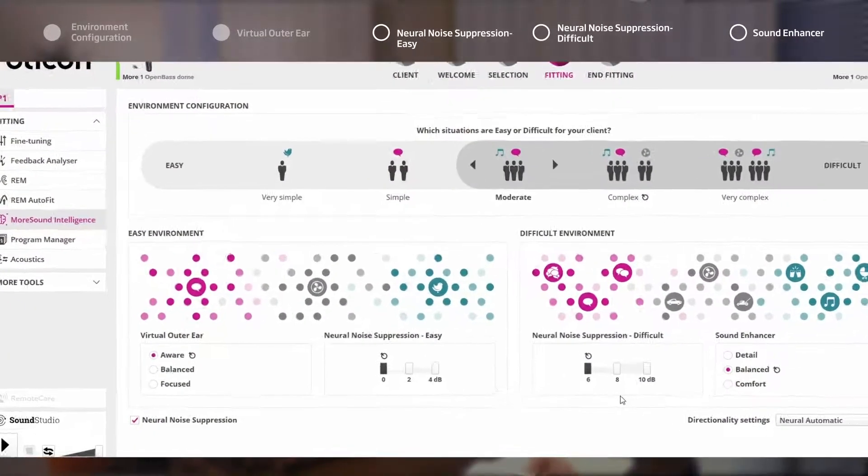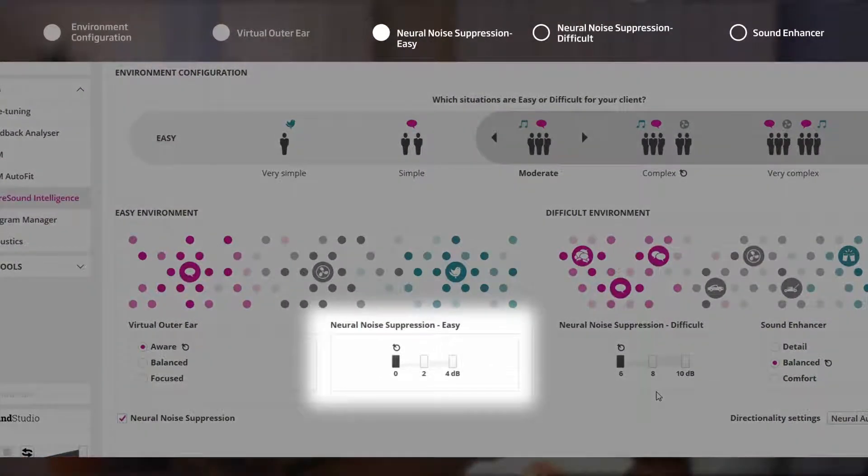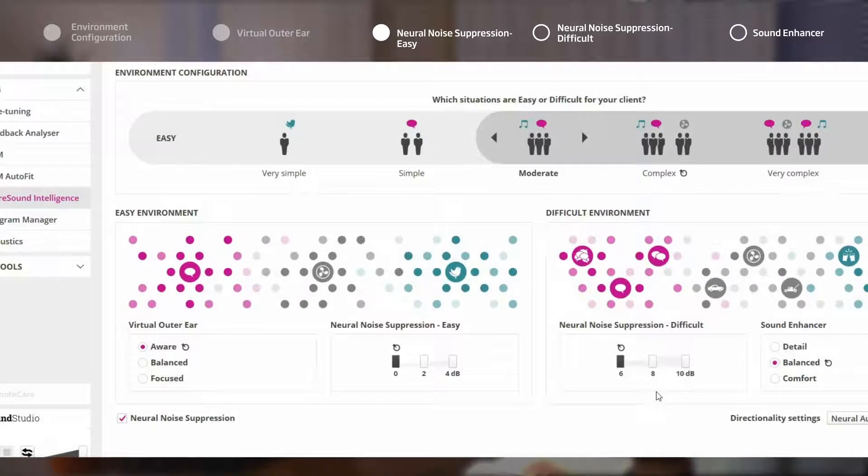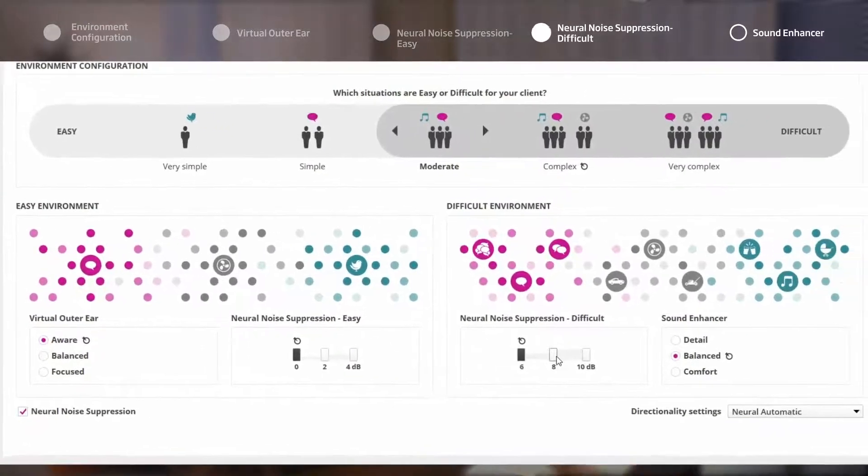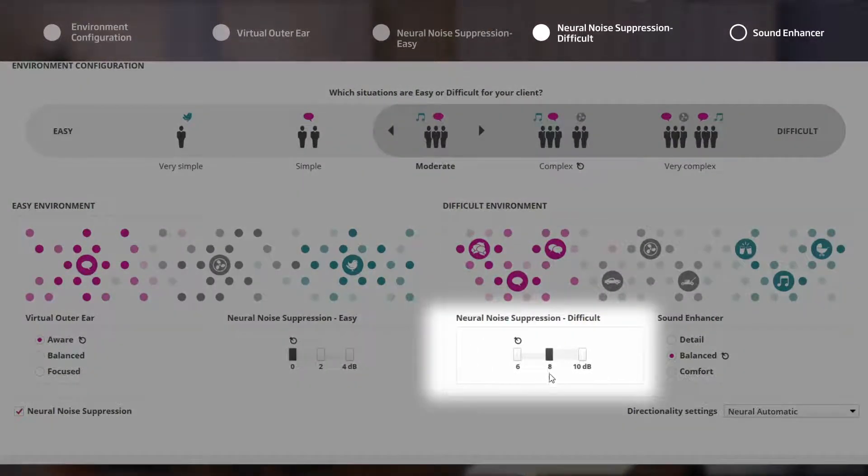No alteration has been made for Neural Noise Suppression in easy settings. Neural Noise Suppression for difficult has now been set at eight decibels. Now the noise suppression will activate at an earlier stage due to the change in Environment Configuration, meaning that it will take less noise for the system to start helping the user. In difficult environments, the user will now have eight instead of six decibels of noise suppression.